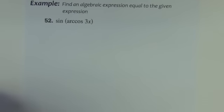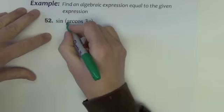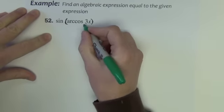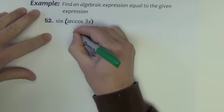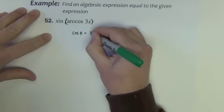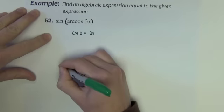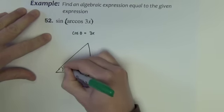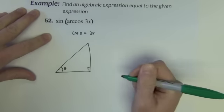Okay, another example of the same type, just different functions, different algebraic expression here. Start inside the parentheses to build your, construct your triangle. Arccosine of 3x, what is that? Well, that means that the cosine of some angle is equal to 3x.